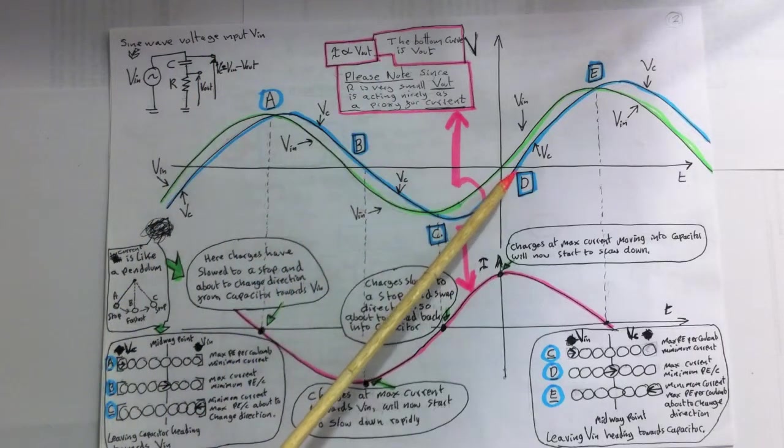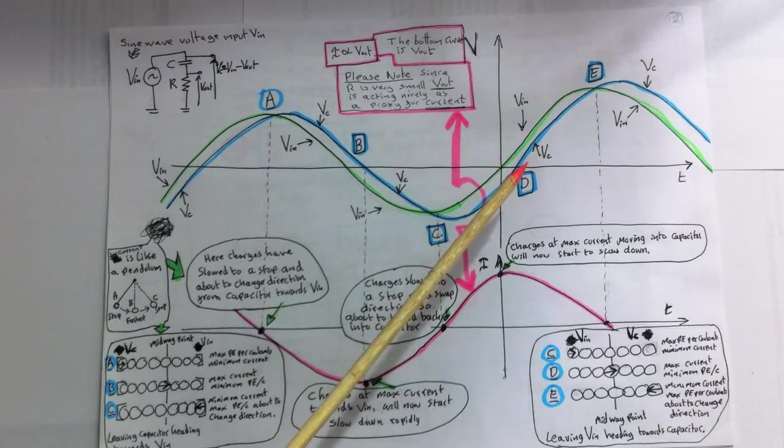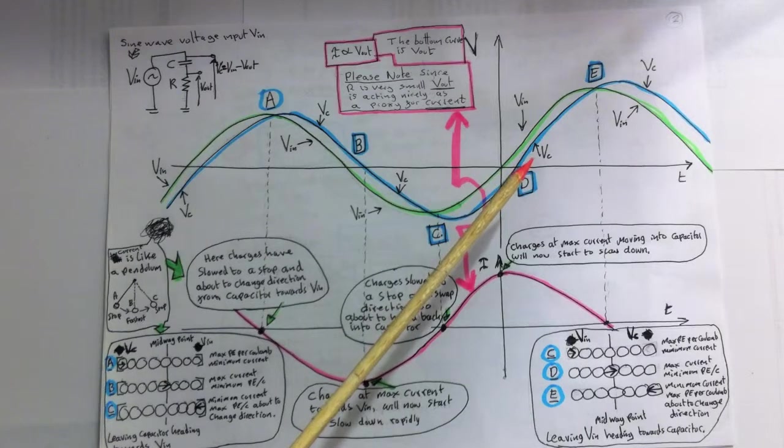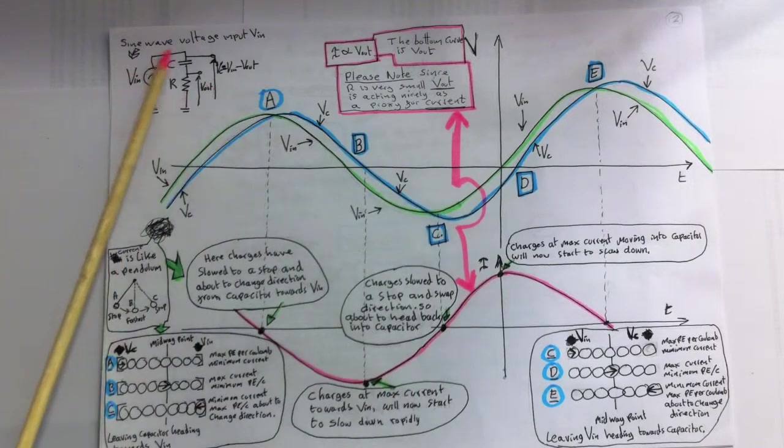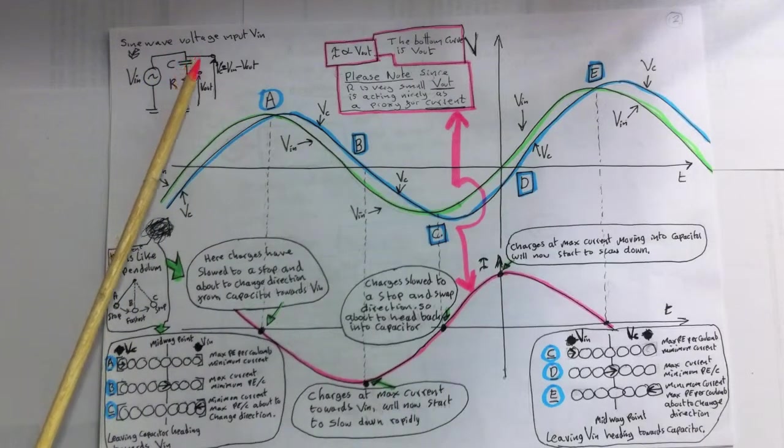At D, the voltage is changing at its fastest rate, heading to a higher voltage value. This means charges are now moving at their maximum rate, heading into the capacitor. So now charges are moving at maximum speed into the capacitor. So they're coming into the capacitor now at the maximum rate.